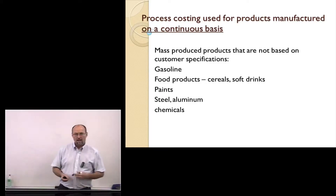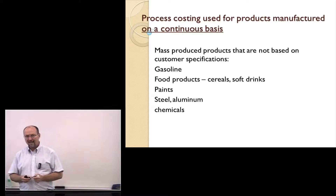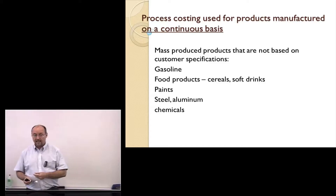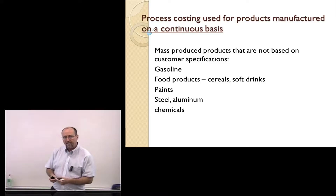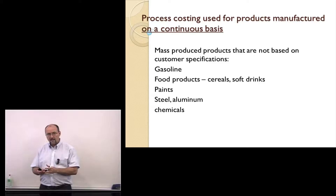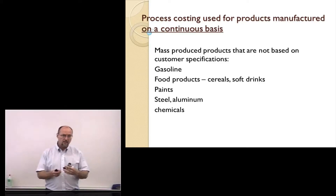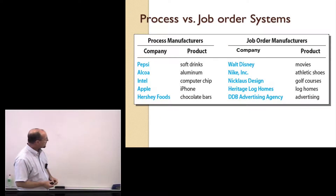The means by which we determine the cost of our product — how much is in work in process ending inventory, how much gets transferred to finished goods, not to mention unit cost in terms of evaluating efficiency — are we manufacturing this product as efficiently as we did last month, last year? We use a different method called process costing. Here's an example of some companies that use process costing.